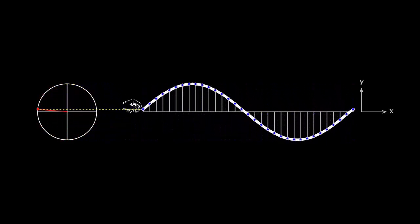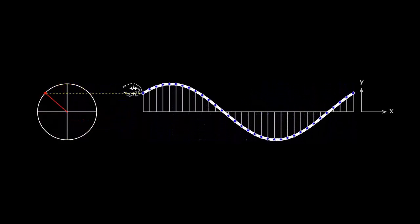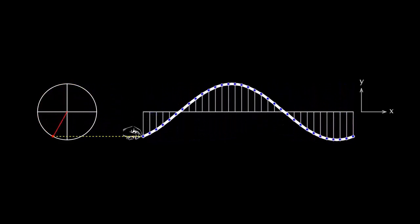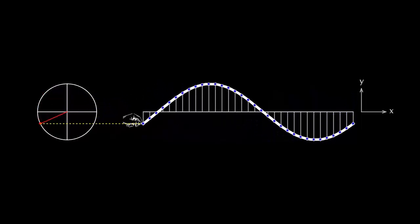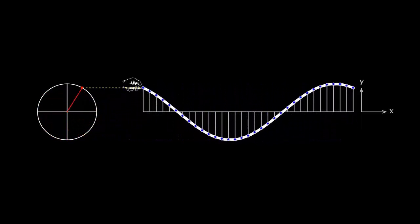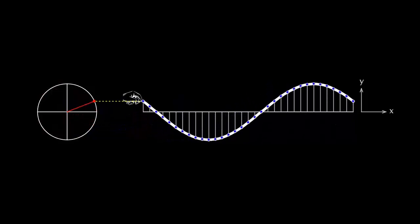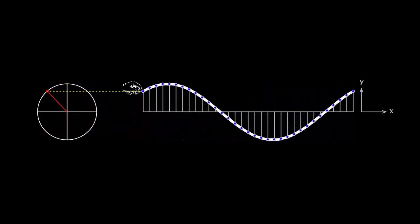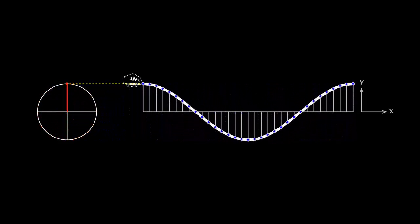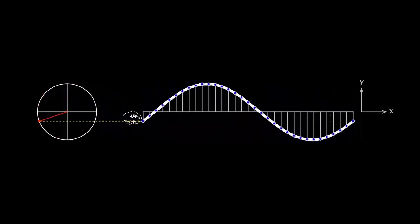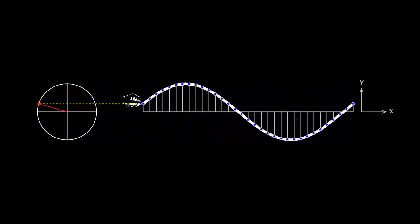Each element of the rope executes the same motion as the end of the rope but with a time lag. At any given moment, different elements are at different positions, causing the rope to have a wave shape. As these oscillating elements move to new positions, the wave shape seems to travel along the rope.